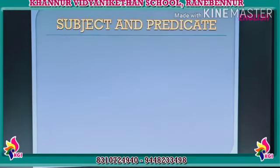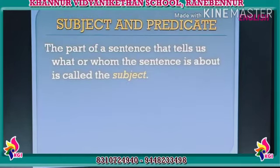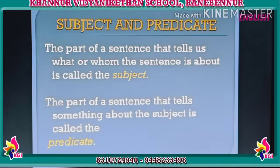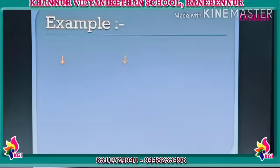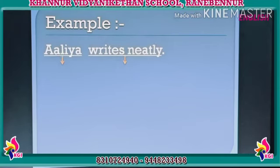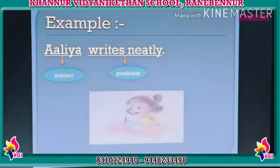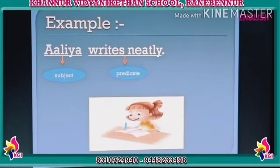Subject and predicate. The part of a sentence that tells us what or whom the sentence is about is called the subject. The part of a sentence that tells something about the subject is called the predicate. For example: Aliyah writes neatly. Here, Aliyah is the subject and writes neatly is the predicate.